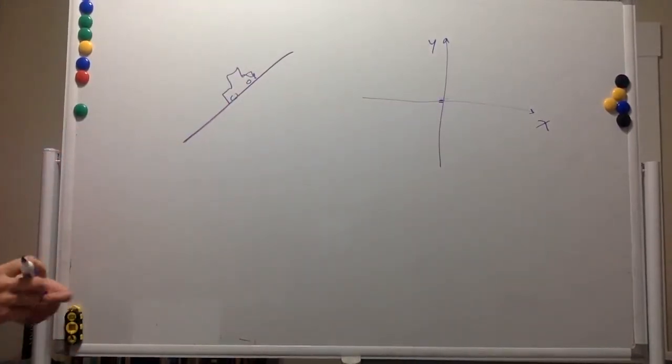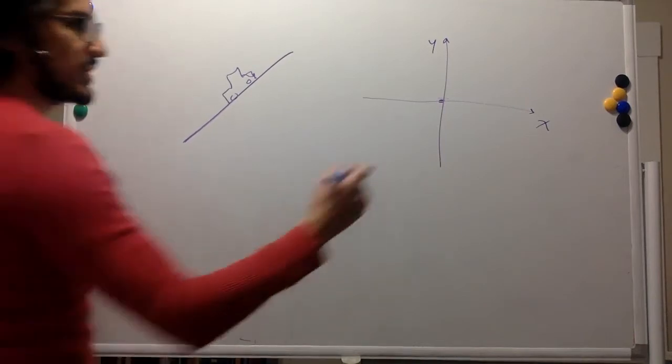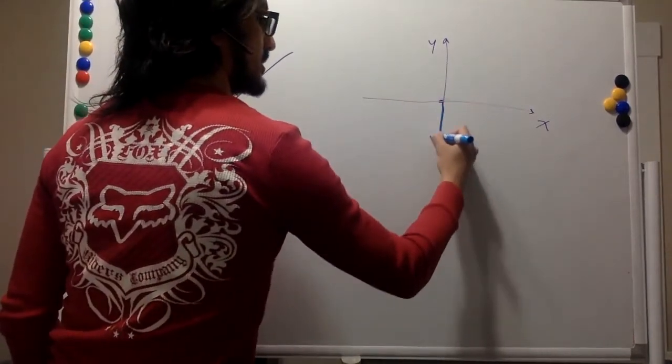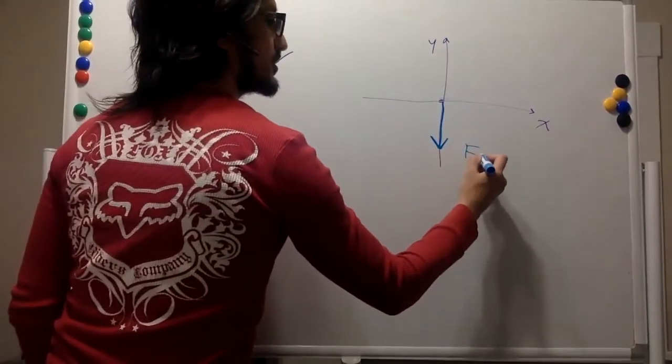Well, gravity is always acting on objects. So you have gravity and it is pointing down because gravity always points towards the center of the earth. This is the force of gravity.